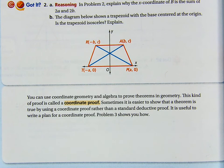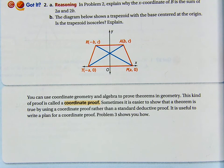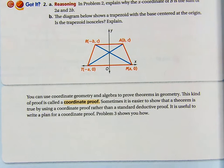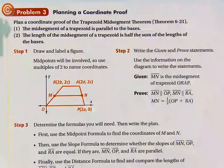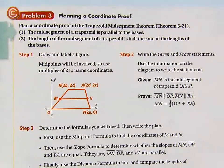Deductive proofs are what we normally use: paragraph proofs, flow proofs, two-column proofs — those are deductive proofs, where we just use statements and reasons to explain something. It is useful to write a plan for a coordinate proof, and problem three shows how, so let's look at problem three and the steps involved in it.